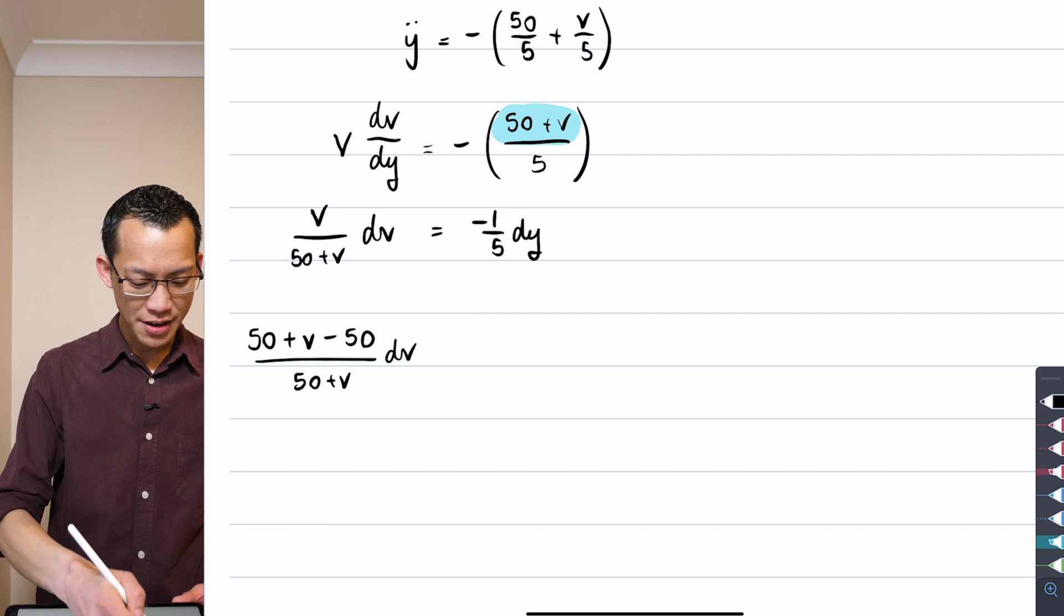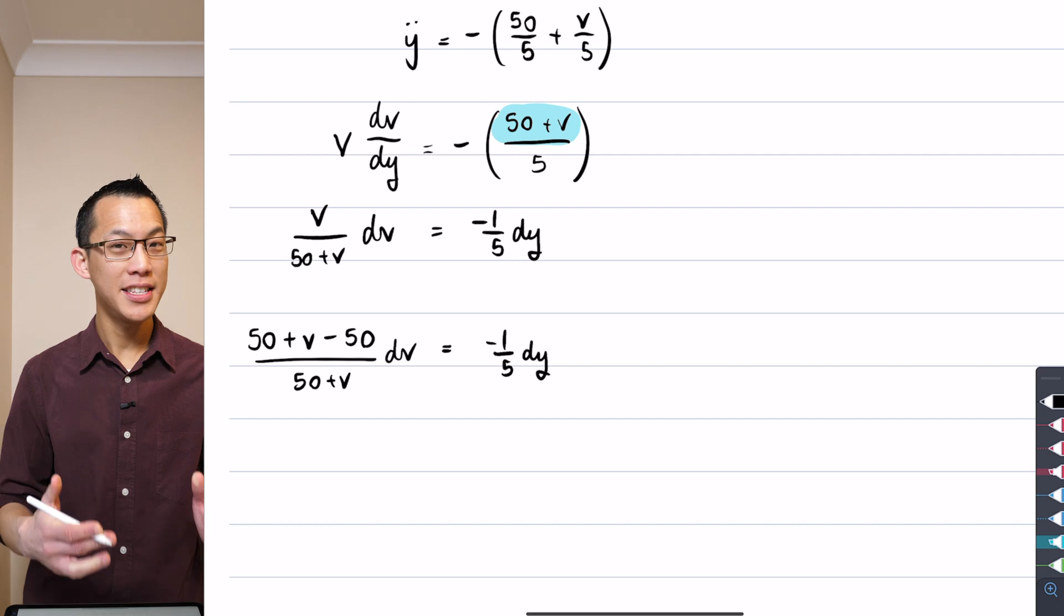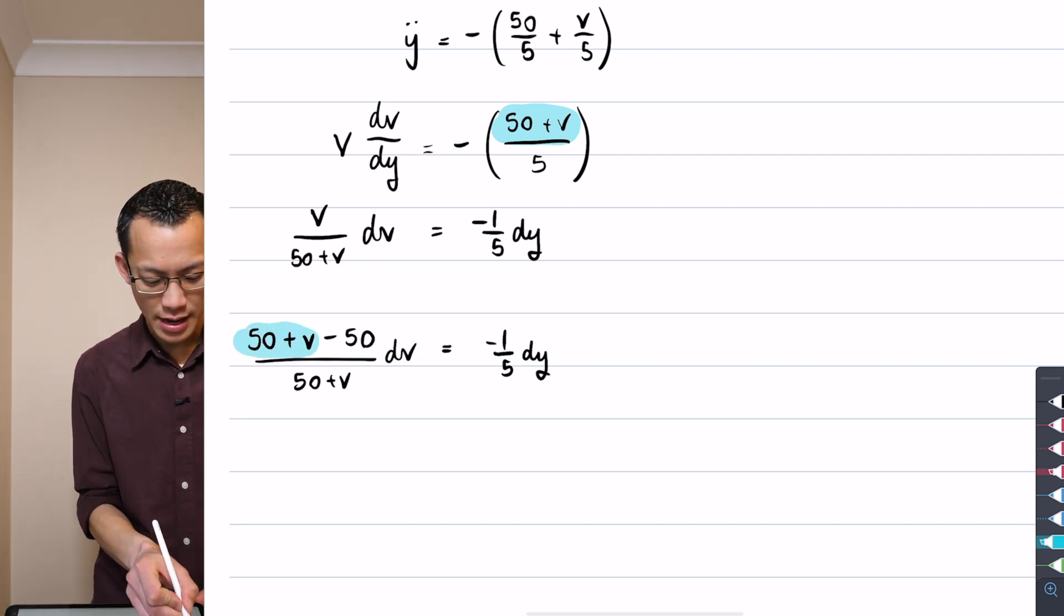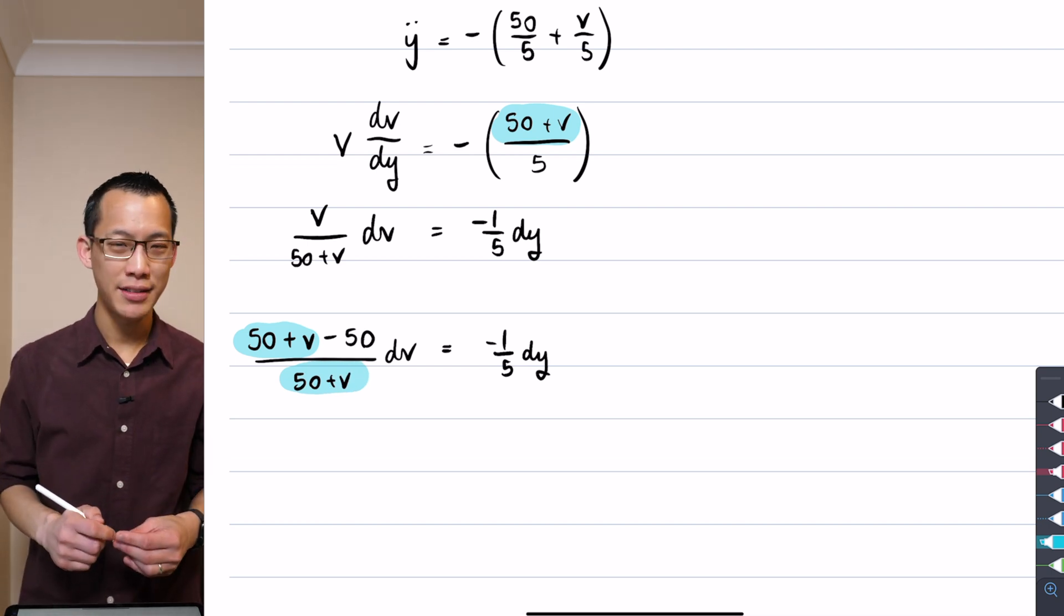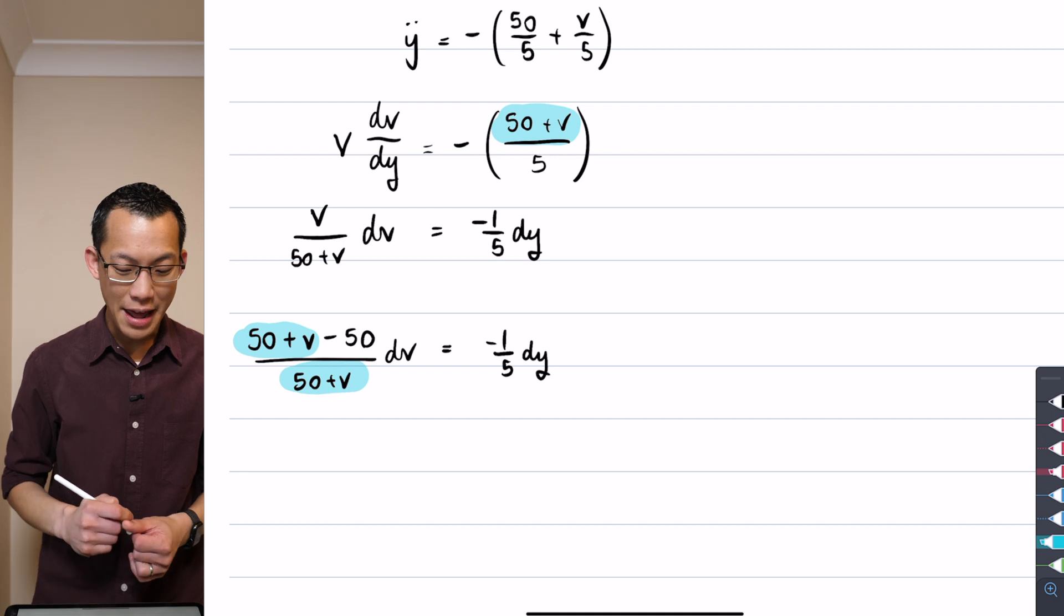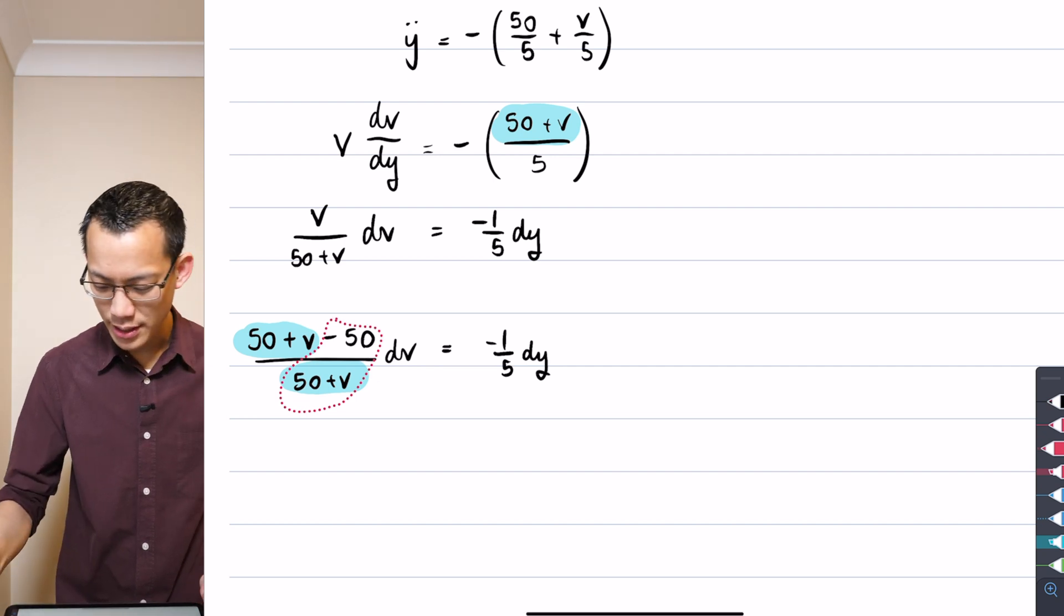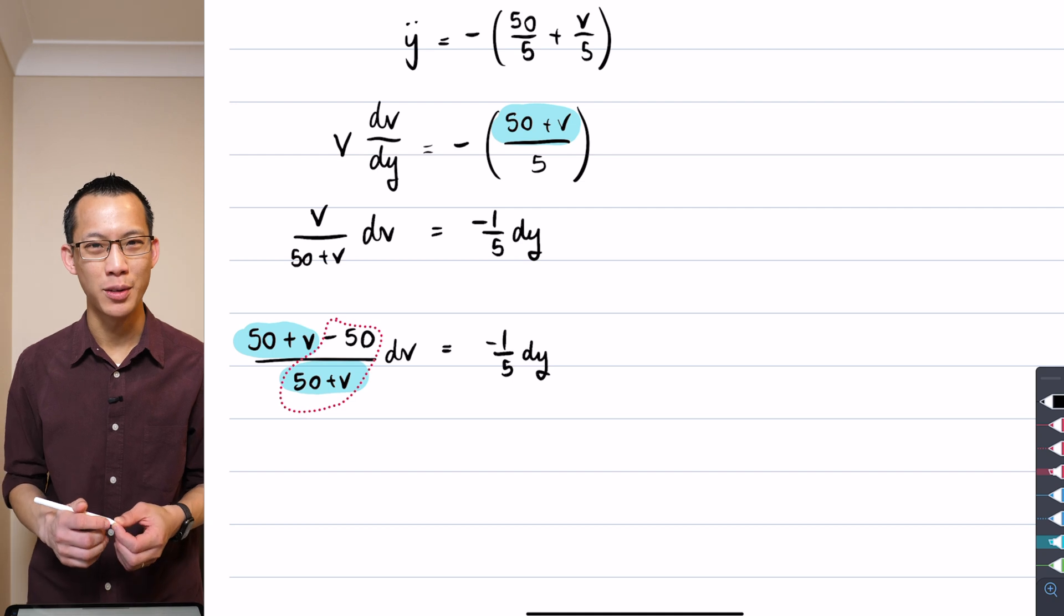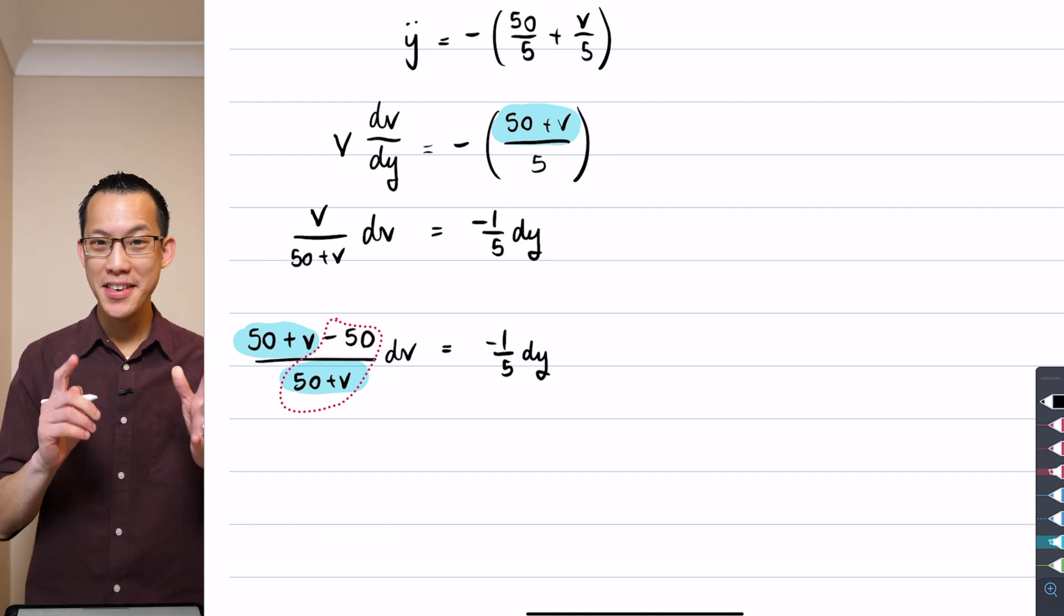Now, hopefully you're convinced that nothing has changed on the left-hand side. But this is better to work with, right? Because you can see here that this 50 plus v on 50 plus v, that I can separate out as its own fraction. That'll just be 1. And then you can say, alright, this minus 50 on 50 plus v, that is the f dash on f situation that I was looking for. Just there's an extra factor of minus 50. So, this I can deal with.